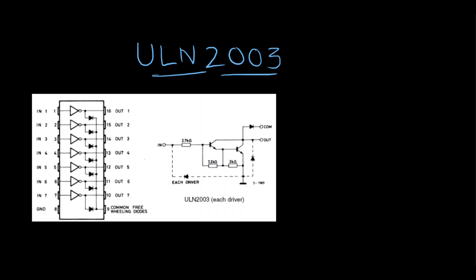ULN2003 is a Darlington pair transistor IC. I guess you already know what you mean by Darlington pair. If you see here, there are two transistors which are cascaded with each other. These are called Darlington pairs.